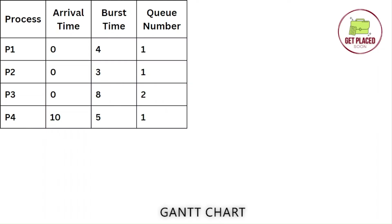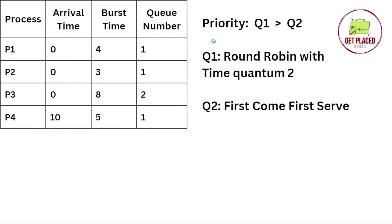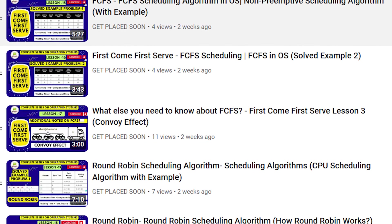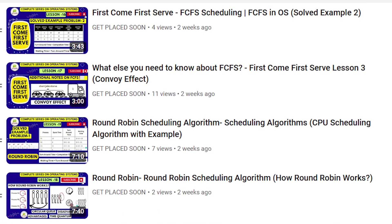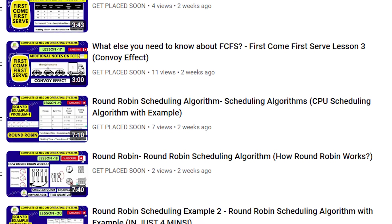Now we are supposed to see how the processes get executed, and to know that we have to build the Gantt chart. The question mentions that Q1 has more priority than Q2. Q1 follows round robin scheduling with a time quantum of two units, and Q2 follows first come first serve scheduling. To solve this problem, you need to know how round robin and FCFS work, as I have explained in previous videos.